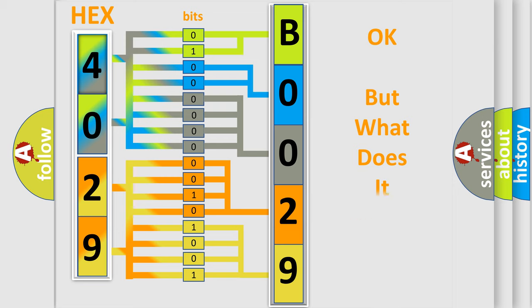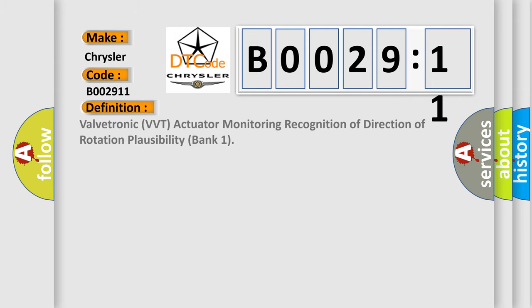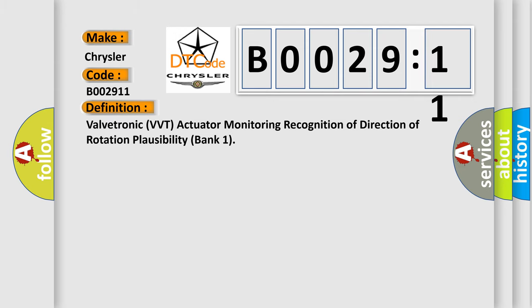The number itself does not make sense to us if we cannot assign information about what it actually expresses. So, what does the diagnostic trouble code B002911 interpret specifically for Chrysler car manufacturers? The basic definition is: Valvetronic VVT actuator monitoring recognition of direction of rotation plausibility bank 1.